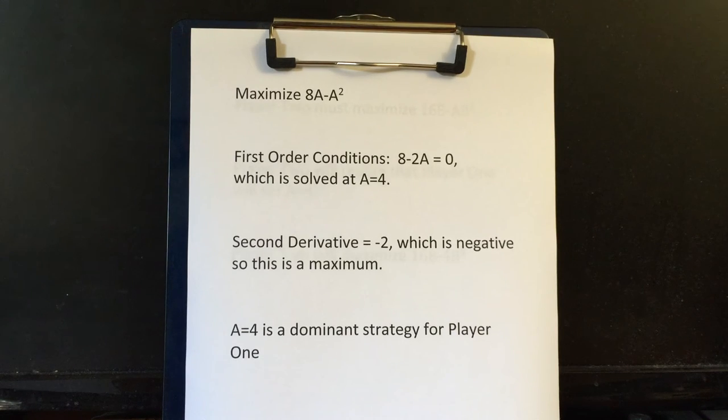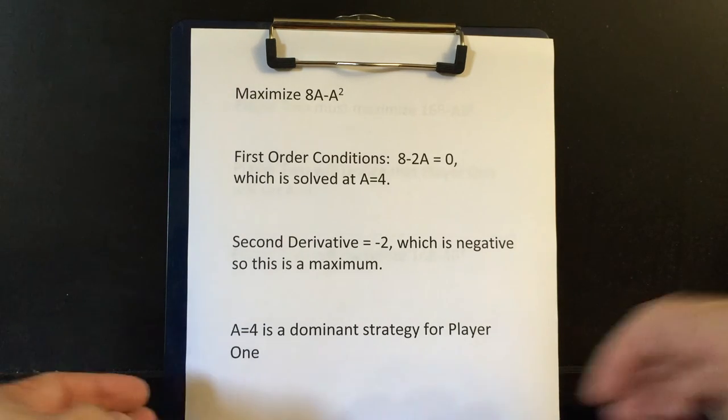Now A equals four is actually a dominant strategy for player one. The reason is that it's dominant because you want to set A equal four regardless of what the other person does, because in this game, what the other person does doesn't affect you. So setting A equals four gives you a higher payoff than setting A equals to anything else, regardless of what the other player does.